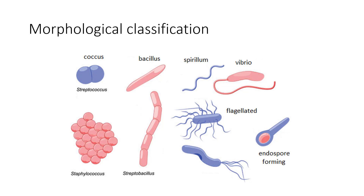Staphylococcus — some are normally found on our skin as part of our normal flora, but certain species can cause disease. Staph means cluster, strep means chain. Bacillus is a rod shape. Spirillum is another common shape. Vibrio is a kind of curved rod. Some bacteria have flagella — multiple flagella, or a few at one end.